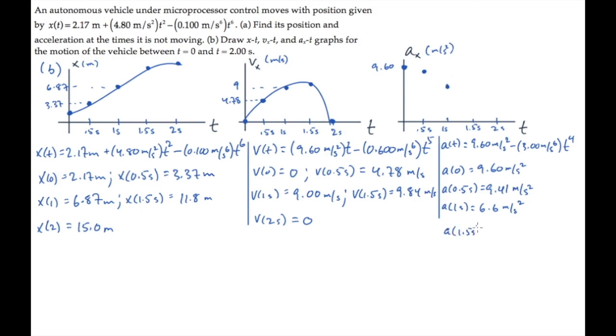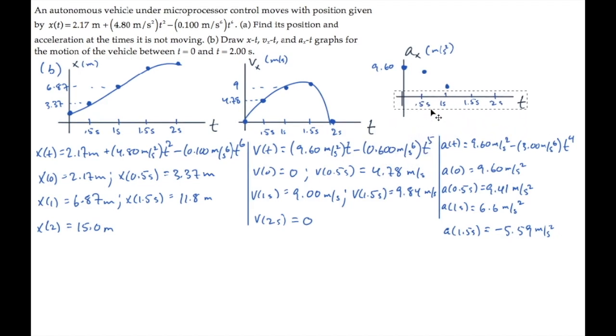At one and a half seconds, the acceleration has gone negative. This means that it's slowing down because the velocity is positive and the acceleration is negative. My axis doesn't have a negative value, so I'll move it up. And that puts the negative values over here.